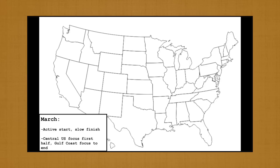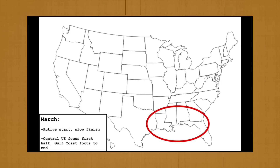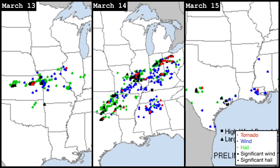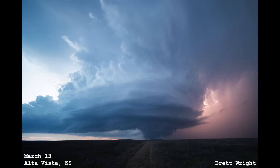To start the season, I expected March to be active toward the beginning, followed by a slow finish, with most of the early activity focused in the central plains shifting toward the Gulf Coast to end the month. What models were predicting to be a fairly active jet stream to begin March did not come to fruition, and tornadic activity was much more limited than I anticipated through the first week or so of the month.